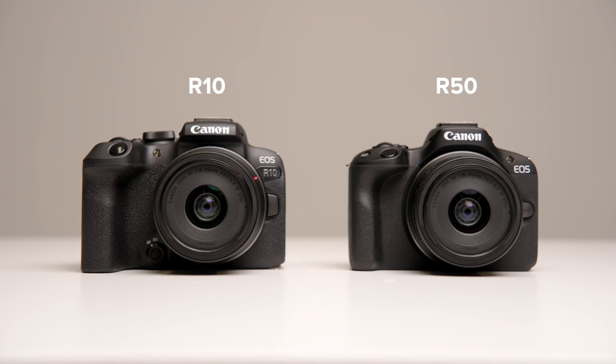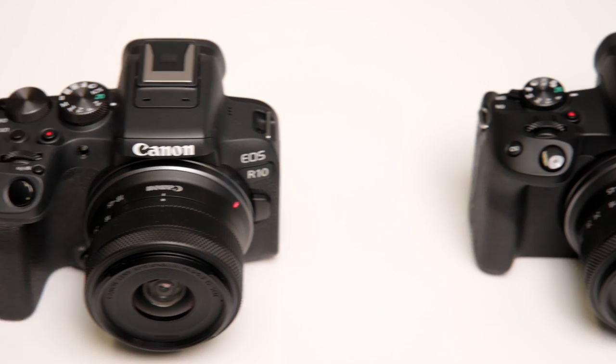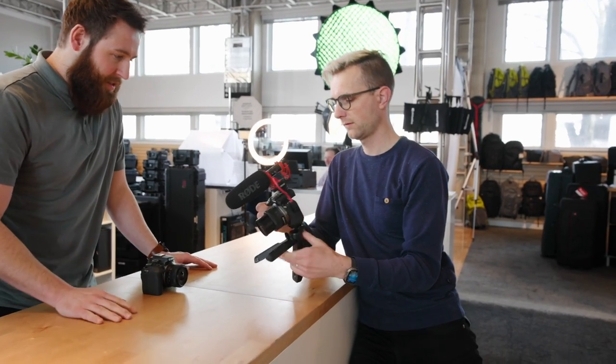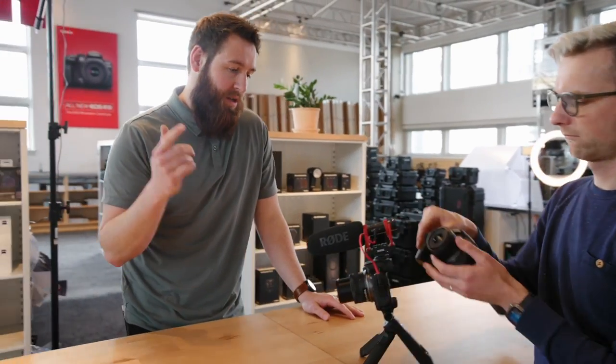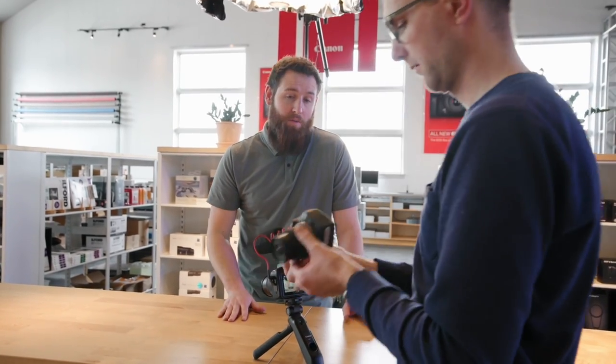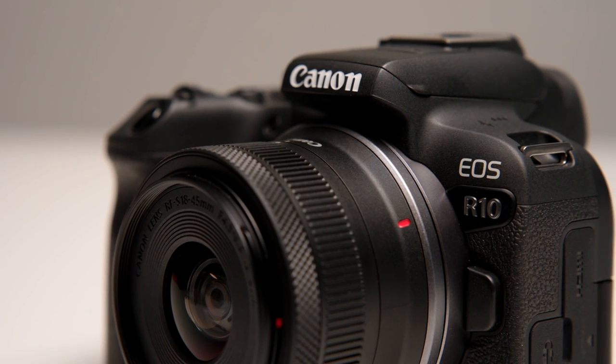The R10 is the bigger model. It's got a bigger grip on it, so it's more comfortable. The R50 has a smaller grip — not as comfortable, but still great. Some of the biggest features boil down to the video specs. The R50 will do 4K at 30 frames per second in 4:2:2 10-bit. The R10 will do 4K 4:2:2 10-bit at 4K 60, so it's got higher recording functions. The R10 will also do 23 photos per second in electronic shutter, whereas the R50 does 15 photos per second — so the burst speeds differ.